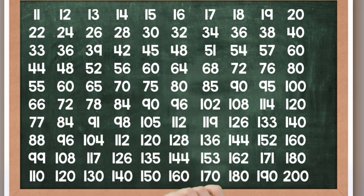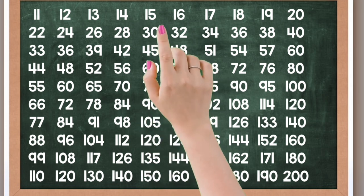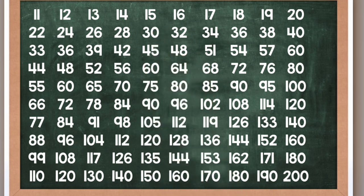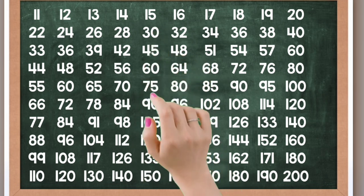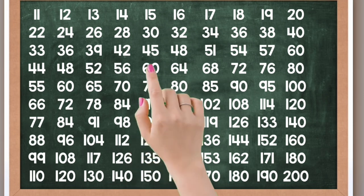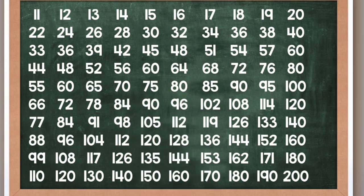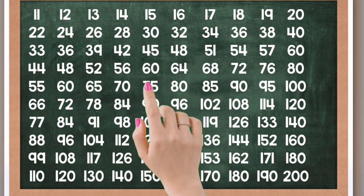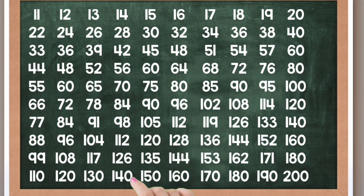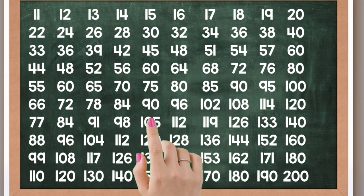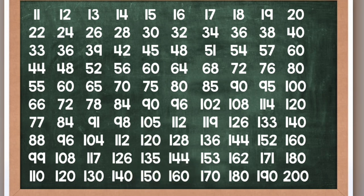15 times 1 is 15, 15 times 2 is 30, 15 times 3 is 45, 15 times 4 is 60, 15 times 5 is 75, 15 times 6 is 90, 15 times 7 is 105, 15 times 8 is 120, 15 times 9 is 135, 15 times 10 is 150.